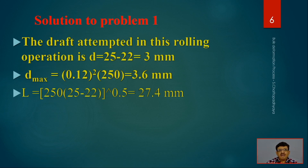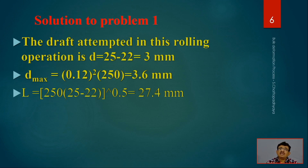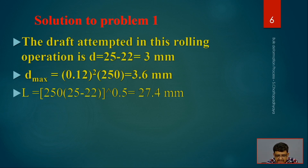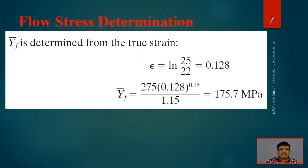To solve, we first check whether the attempted draft is feasible. Using d_max = μ²·R: d_max = (0.12)² × 250 = 3.6 mm. The attempted draft is 25 − 22 = 3 mm, which is less than 3.6 mm, so the rolling operation is feasible. Next, the contact length L = √(250 × 3) = 27.4 mm.